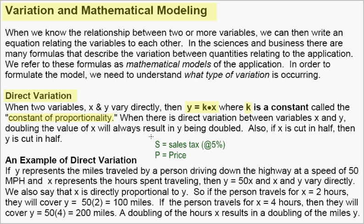Here is an example you are probably familiar with: sales tax and price. Say we have a sales tax of 5% and we let s equal that sales tax and p equal price. This will result in the model s equals 0.05p. So we multiply 5% times the price. So if we have an item that costs $100, sales tax will be $5. But if we have an item that costs $200, sales tax will be $10. It doubles.